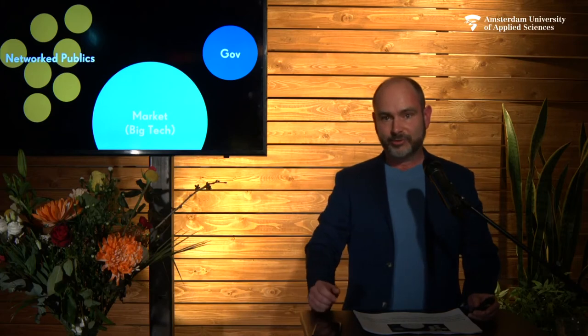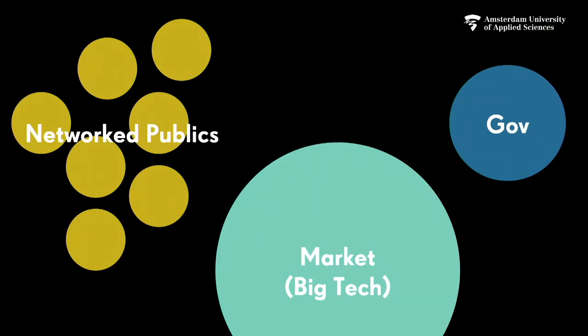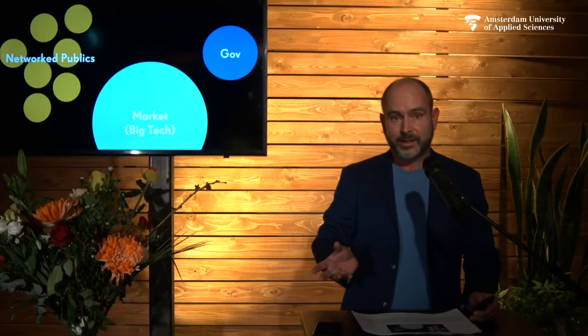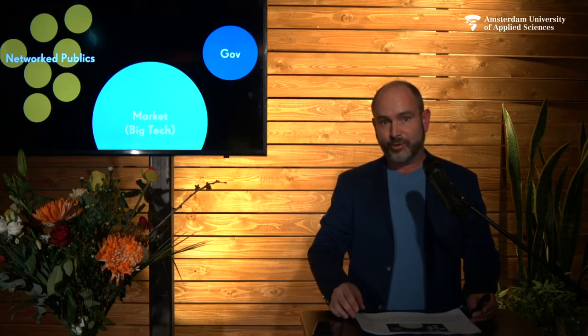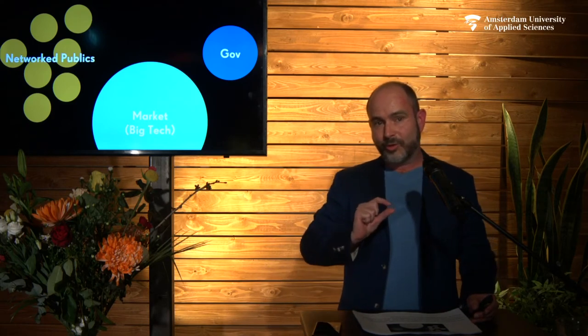If we redraw the picture, what we're seeing probably looks something like this: we have the market and big tech playing an important role in society. To a certain extent, their commercial services have become our de facto civic infrastructure, because all those network publics — those small organizations — are using the technologies of the big technological players. The landscape of social movements is large but also a bit fragmented, and these new forms of organizing local movements through networks are really new, and we're only just barely starting to understand how exactly that works.